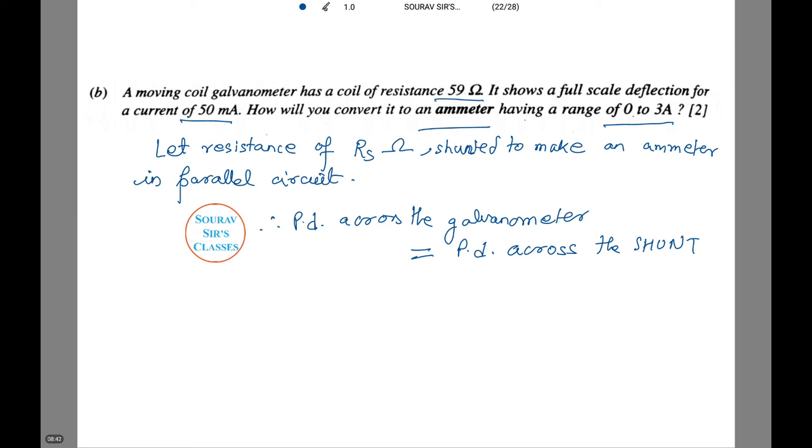Let resistance of Rs ohms be shunted with the galvanometer to make it an ammeter in parallel connections. Thus, the potential difference across the galvanometer is equal to the potential difference across the shunt. Therefore, Ig × Rg equals (I - Ig) × Rs.